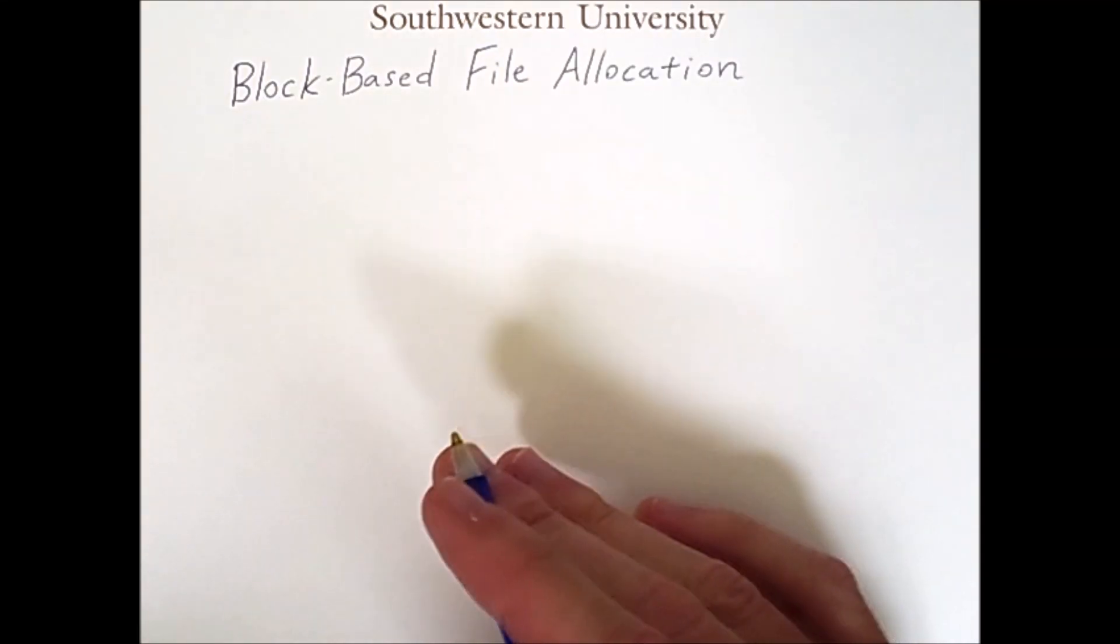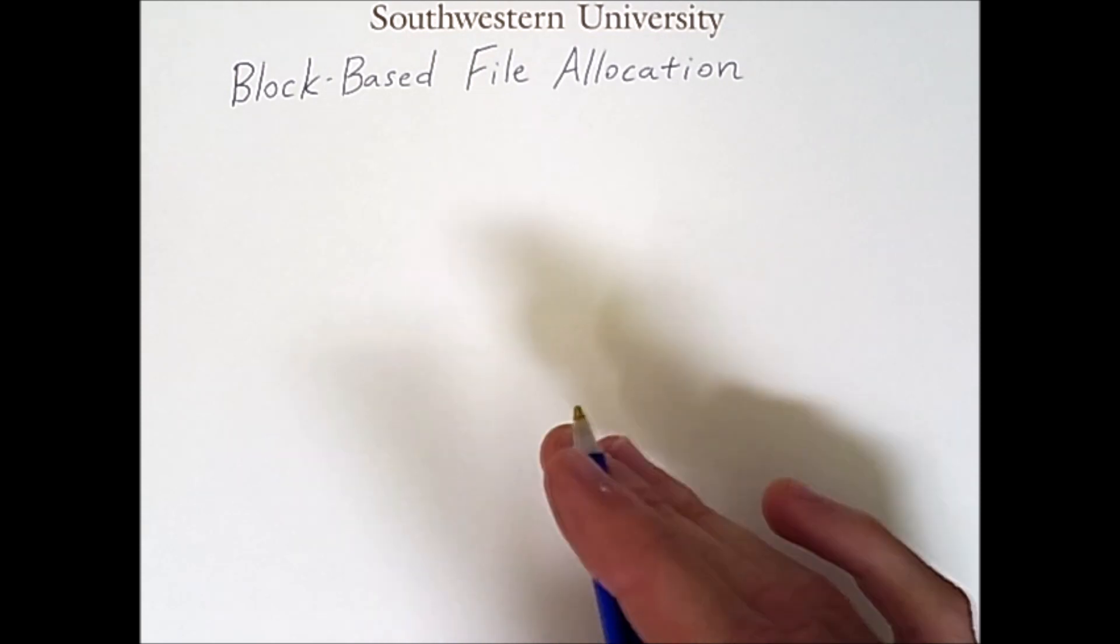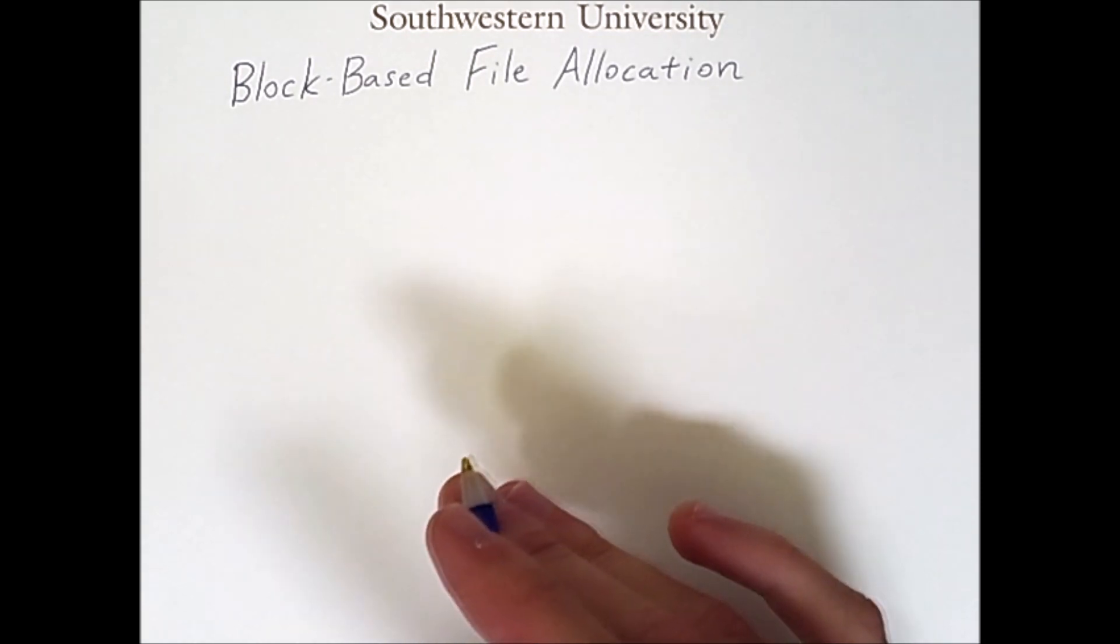If the file system breaks the disk into logical fixed-size blocks, then there needs to be a way of allocating blocks to files so that the files can be stored on disk. A file can vary in size and therefore can be spread across several blocks. There are several different ways of allocating blocks to files.